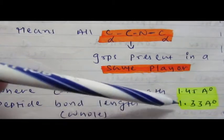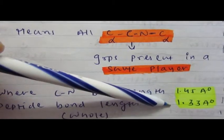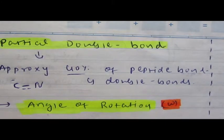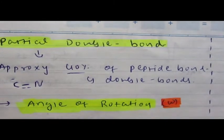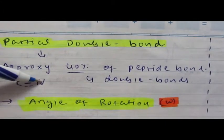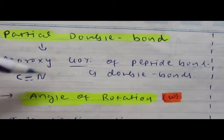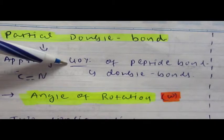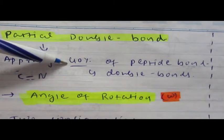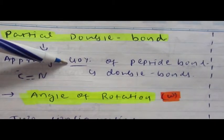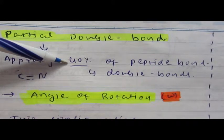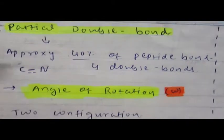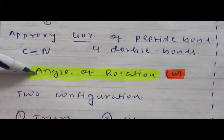Another feature is that peptide bond contains partial double bond character. That means the bond between C and N is partial double bond—approximately 40% of peptide bonds have double bond character, whereas 60 to 70% are single bonded character.